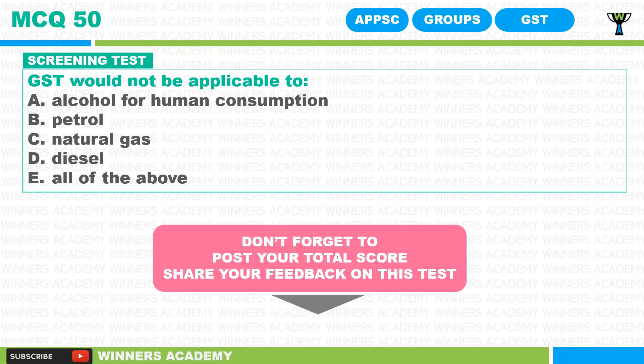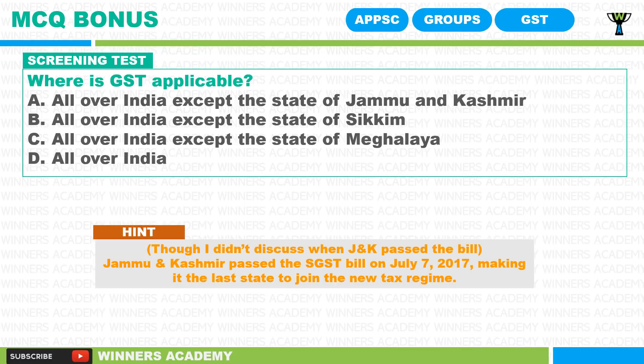MCQ 50, the last question: GST would not be applicable to — alcohol for human consumption, petrol, natural gas, diesel, or all of the above? Don't forget to post your total scores and share your feedback on this test in the comment section. I have put one more bonus question — you don't have to answer, but if you can, it's well and good.